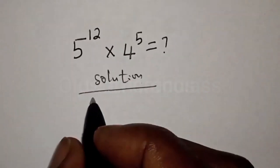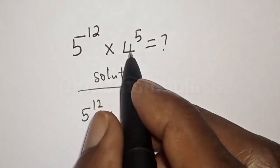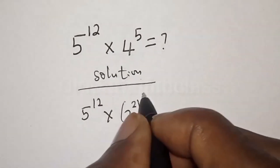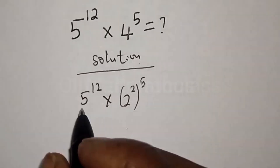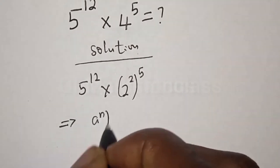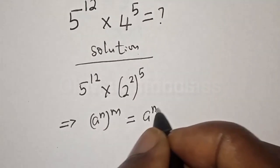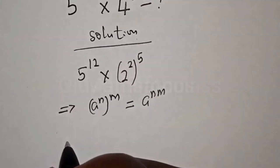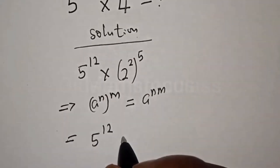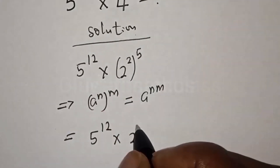5 raised to power 12 multiplied by 4 raised to power 5 can be written as 2 squared raised to power 5. Remember this rule: a raised to power n, to the power of m, is equal to a raised to power n times m. Then this becomes 5 raised to power 12 multiplied by 2 raised to power 10.